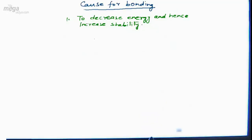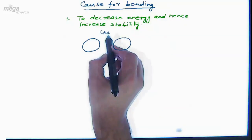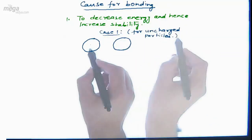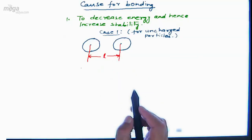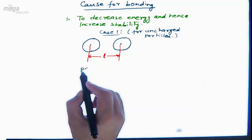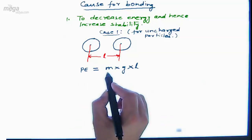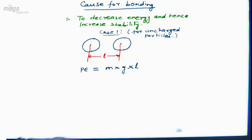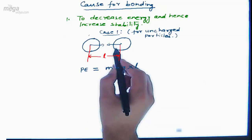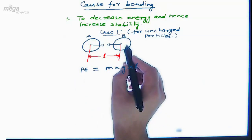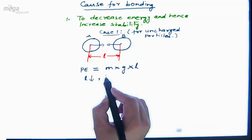Let's see how during bonding energy is decreased and stability is increased. Consider Case 1: two uncharged particles. Let the internuclear distance between the two particles be 'l'. The potential energy for an uncharged particle is given by the formula: PE = m × g × l, where m is the mass, g is the acceleration due to gravity, and l is the separation between the particles. During bonding, particle A approaches particle B, so l will decrease.